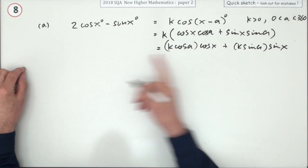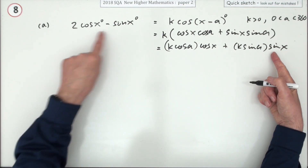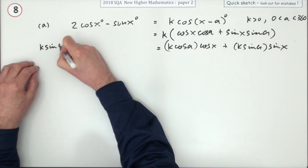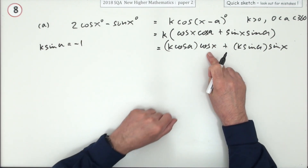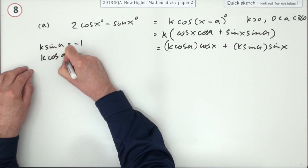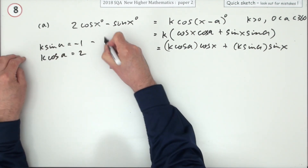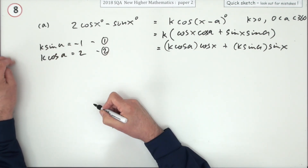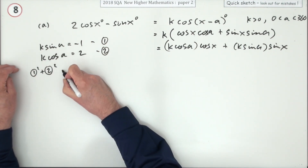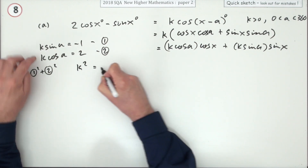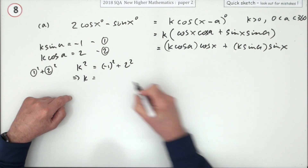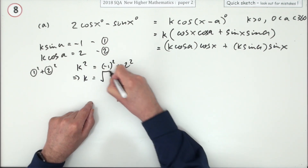You can then identify the coefficient of sine as k sin a, which should equal negative one, and the coefficient of cos as k cos a, which equals two. Strictly speaking these are two simultaneous equations. If you square and add them, you get k² = (−1)² + 2² = 5, so k = √5.